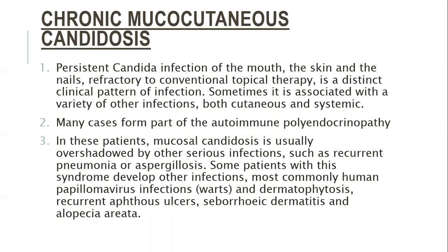Chronic mucocutaneous candidiosis: persistent Candida infection of the mouth, skin, and nail that is refractory to conventional therapy is a distinct clinical pattern. Sometimes it is associated with a variety of other infections, both cutaneous and systemic. Many cases form part of autoimmune polyendocrinopathy. In these patients, mucosal candidiosis is usually overshadowed by other serious infections such as recurrent pneumonia or aspergillosis. Some patients with this syndrome develop other infections — most commonly warts, dermatophytosis — and non-infectious conditions like recurrent aphthosis, seborrhoeic dermatitis, and alopecia areata. A differentiating feature is the development of infection in early childhood.